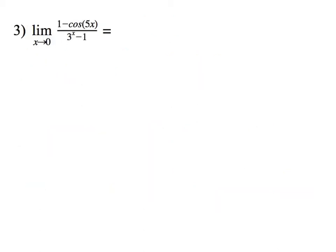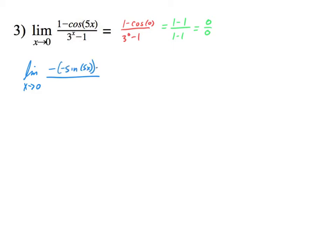So we have this next limit. Let's plug in 0. When we plug in the number, we have 1 minus cosine — this becomes 0 because 5 times 0 is 0 — and it's going to be 3 to the 0 minus 1. So this is 1 minus cosine 0, which is 1, and 3 to the 0 is 1. So we get 0 over 0, which is indeterminate form. We can use L'Hôpital's rule. The derivative of the top: the 1 becomes gone, and the derivative of negative cosine of 5x is positive sine of 5x times 5. On the bottom, the derivative of 3 to the x is simply 3 to the x times ln3, and the minus 1 becomes 0.